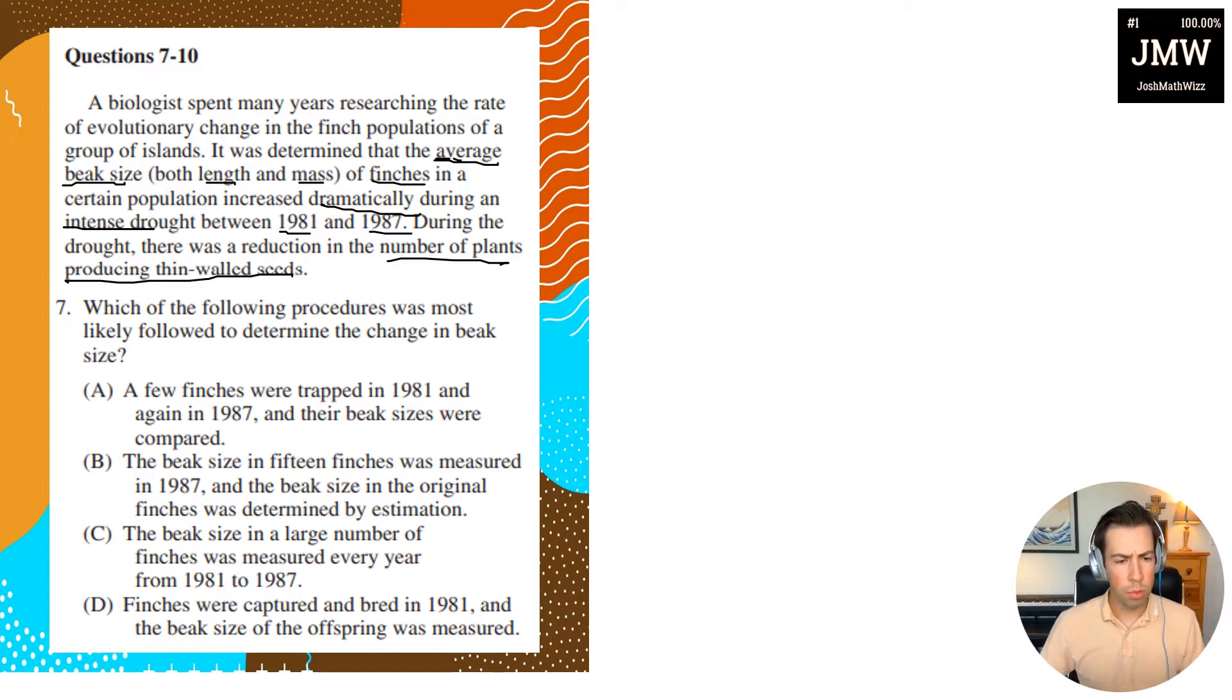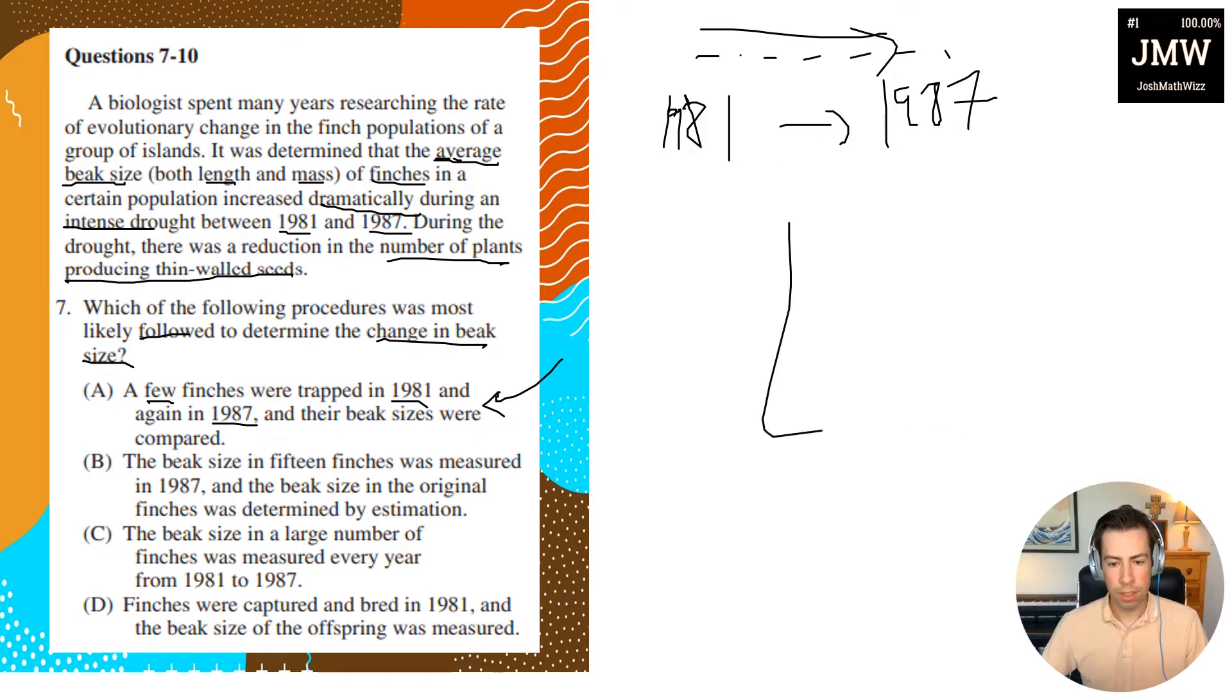All right, let's read our question now. Which of the following procedures was most likely followed to determine the change in beak size? So let's just go ahead and go through each of these answer choices. For answer choice A here we have a few finches were trapped, so a few of them in 1981 and again in 1987, and their beak sizes were compared. So my first thought is like, okay, well just a few, and the other thing is they were only measured in 1981 and then in 1987. So we're not actually getting multiple data points, right? Normally, you know, you'd have a graph with multiple data points you could just extrapolate so that way you could get like a line of best fit. But we don't have any of that. So yeah, answer choice A definitely does not make sense.